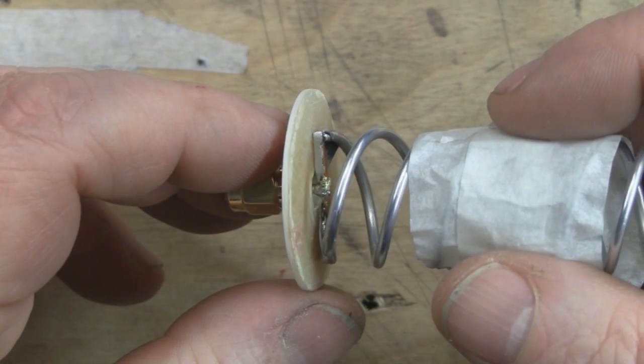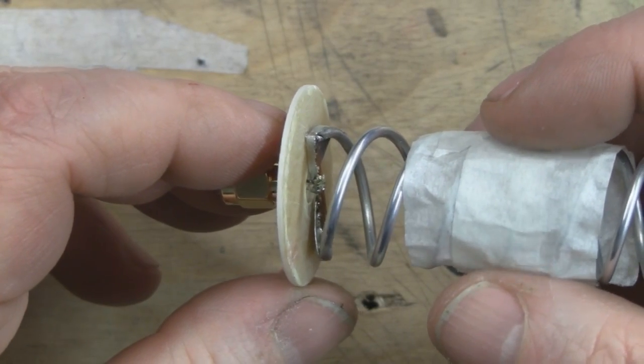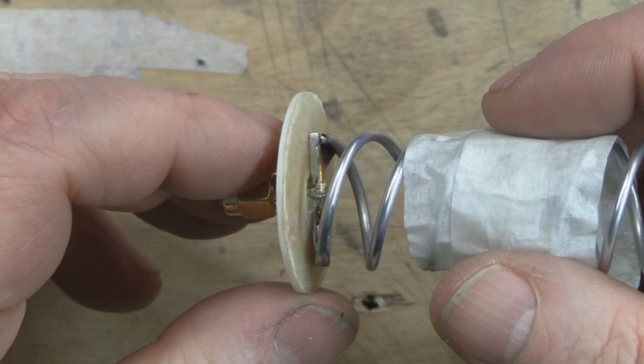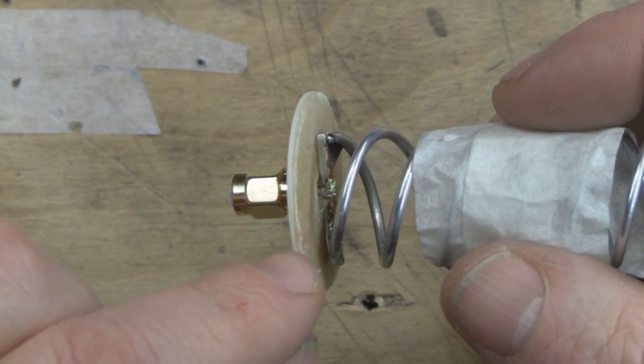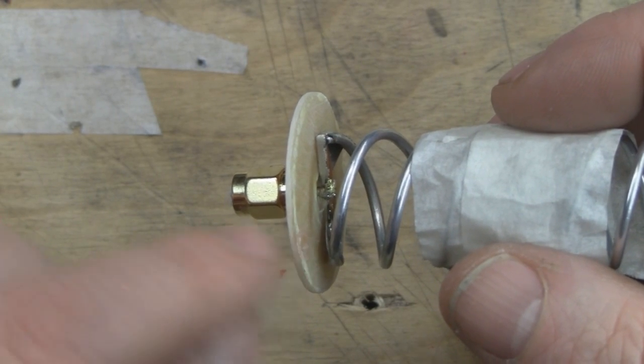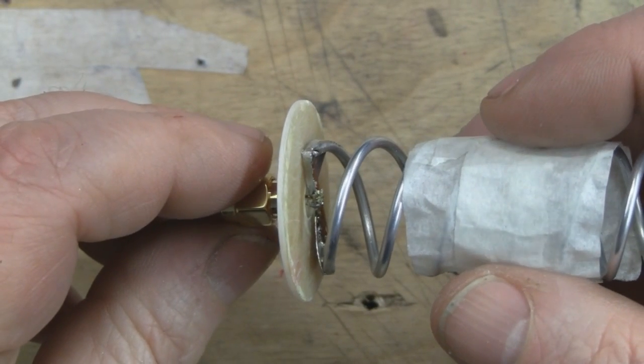Now that the helical is soldered in place onto that SMA connector, I'm going to add a little bit of epoxy glue to the base just to give it some more strength, because we've only got that small blob of solder on that center pin holding the helical together at the moment.